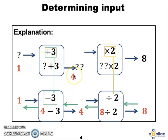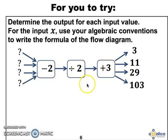Let's take the 1 and put it into the flow diagram. 1 plus 3 is 4, and 4 times 2 is 8. Great news!